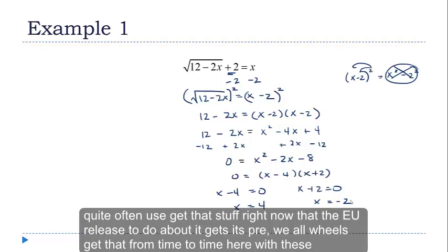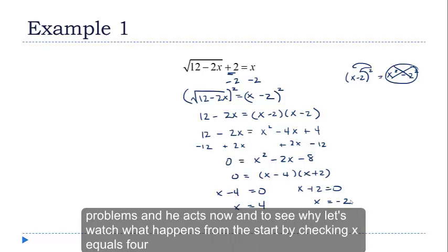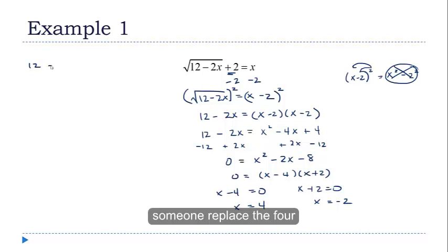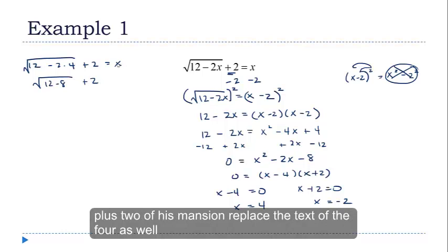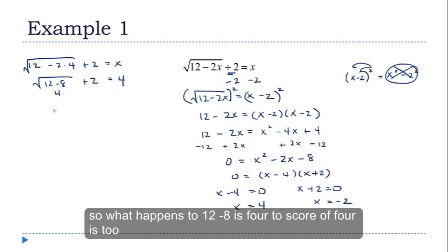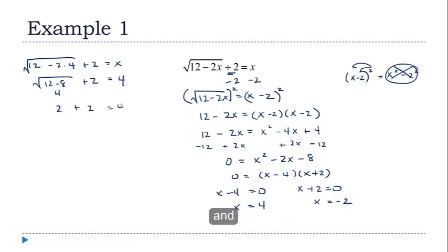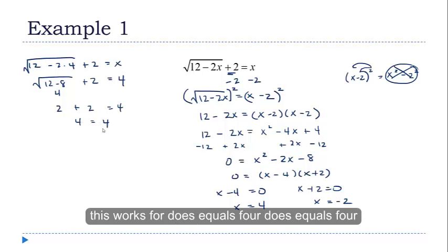Let's watch what happens. I'm going to start by checking x equals 4, replacing x in the equation with 4. This becomes the square root of 12 minus 8 plus 2, which equals 4. 12 minus 8 is 4, the square root of 4 is 2, and 2 plus 2 equals 4. That works — 4 equals 4. So x equals 4 checks out as a valid solution.